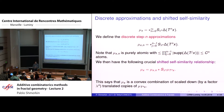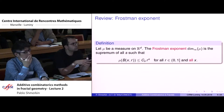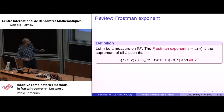I recall the definition of the Frostman exponent of a measure. I want to control the mass of an arbitrary ball — not a typical ball but an arbitrary one — of arbitrary radius and arbitrary center, with a fixed constant that does not depend on the point. The best possible exponent (best means largest) is the supremum of all such s, and this supremum is called the Frostman exponent, or L-infinity dimension of the measure.